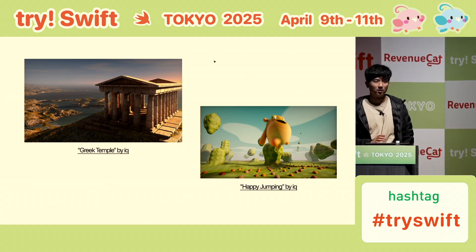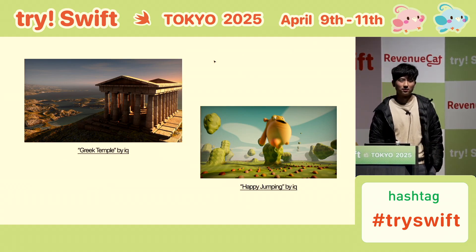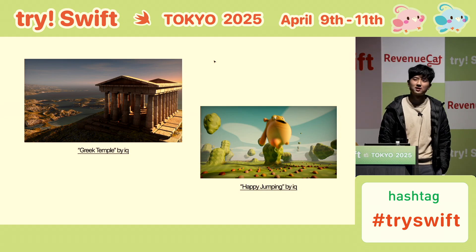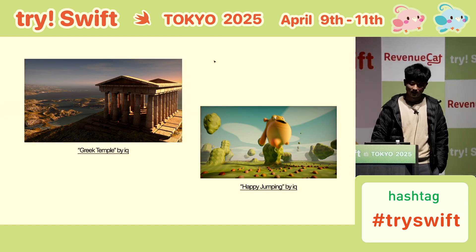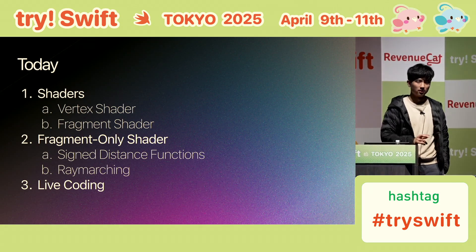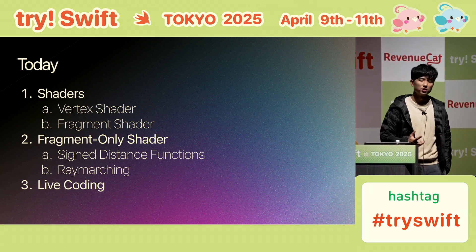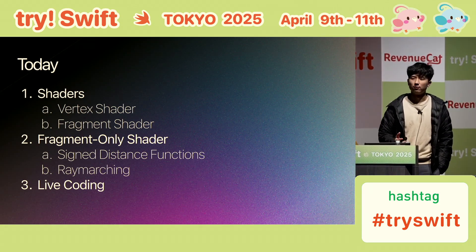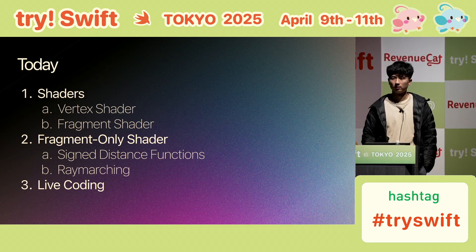Today I'm going to try to show you how to do this stuff. It's going to be an introduction — pretty basic — but hopefully you'll get an understanding of how to make these types of cool effects with Swift. We'll start with shaders, then do a fragment-only shader, and finally do some live coding.